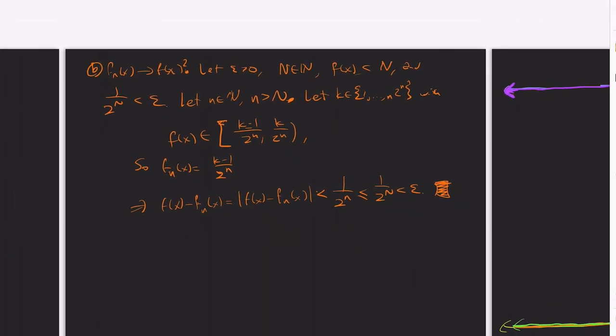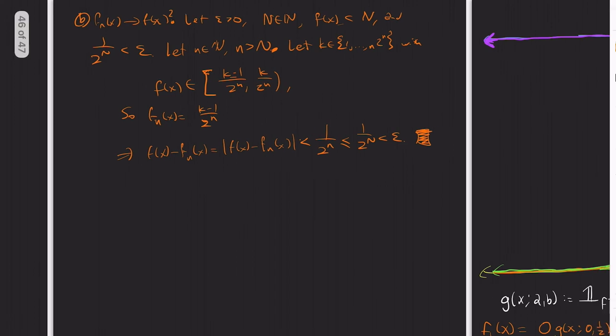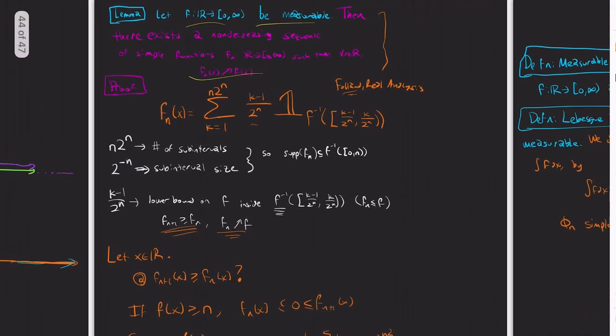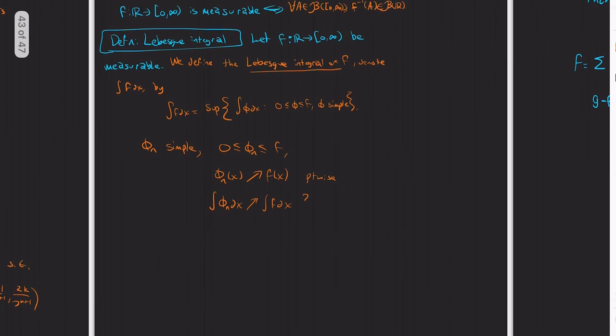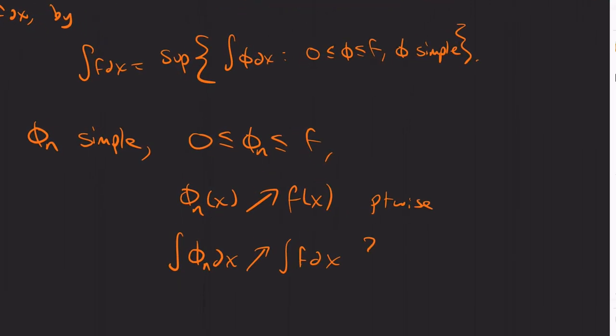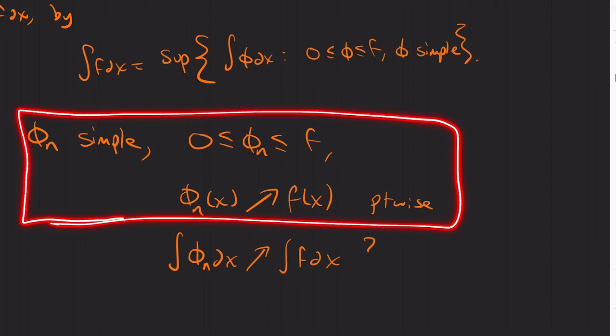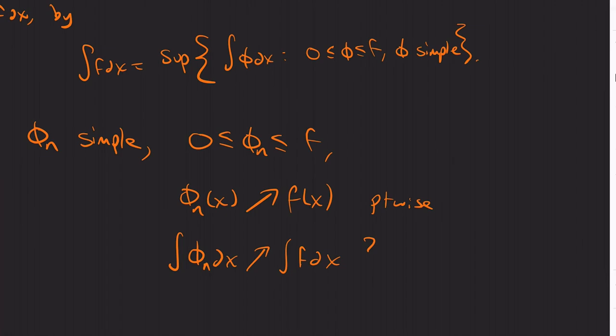So there is a sequence of increasing functions such that, okay, so what we showed is this. We showed this. However, we did not, we absolutely did not show this. So this relies on something called the monotone convergence theorem, which is what we'll show in the next video. Thank you guys for watching.